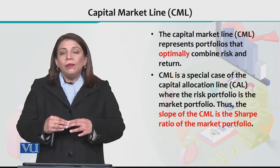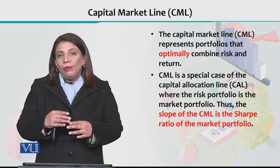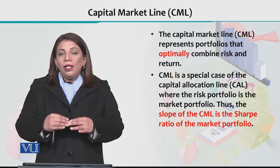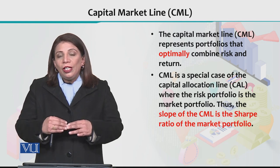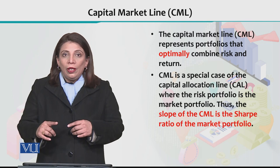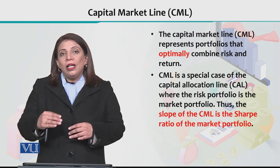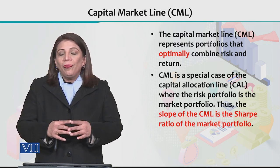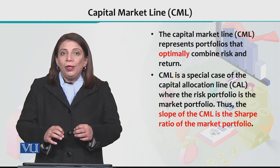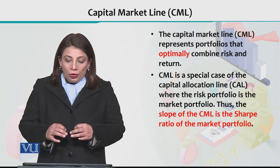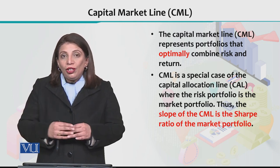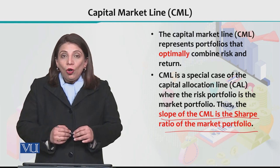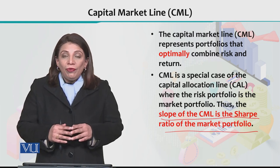When we talk about the capital market line, we talk about the capital allocation line which represents the optimal combination of risk and return. The speciality of CML is that its slope is the Sharpe ratio — specifically the Sharpe ratio of the market portfolio.